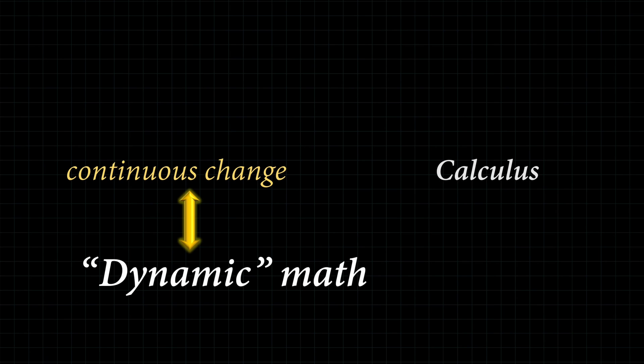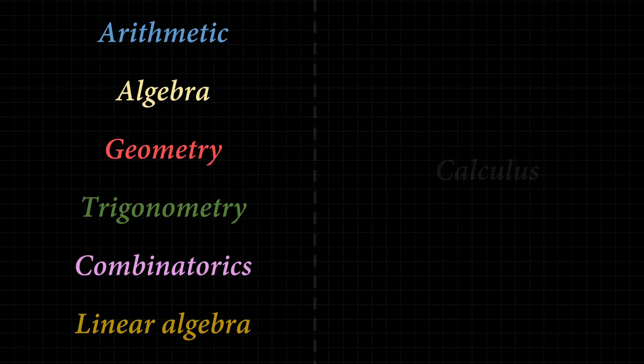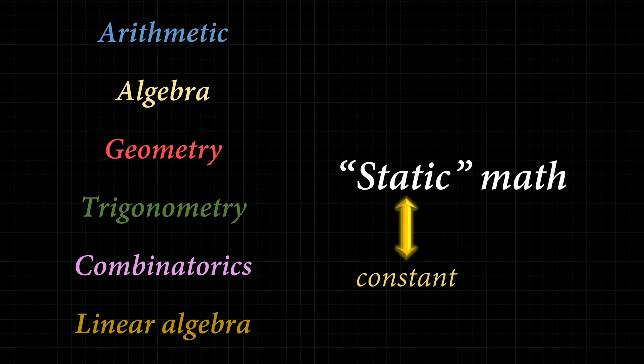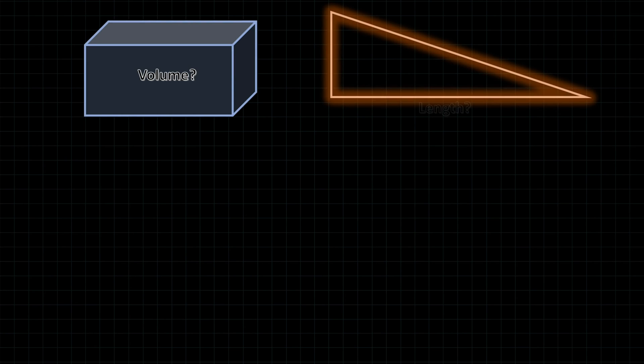This video will clarify just what that means and how that applies to the two main branches of calculus. The majority of topics in math are static, or in other words, they are constant. Here's what I mean: if you see a rectangular prism, would you be able to find the volume? Or how about finding the side length or angle within a triangle?